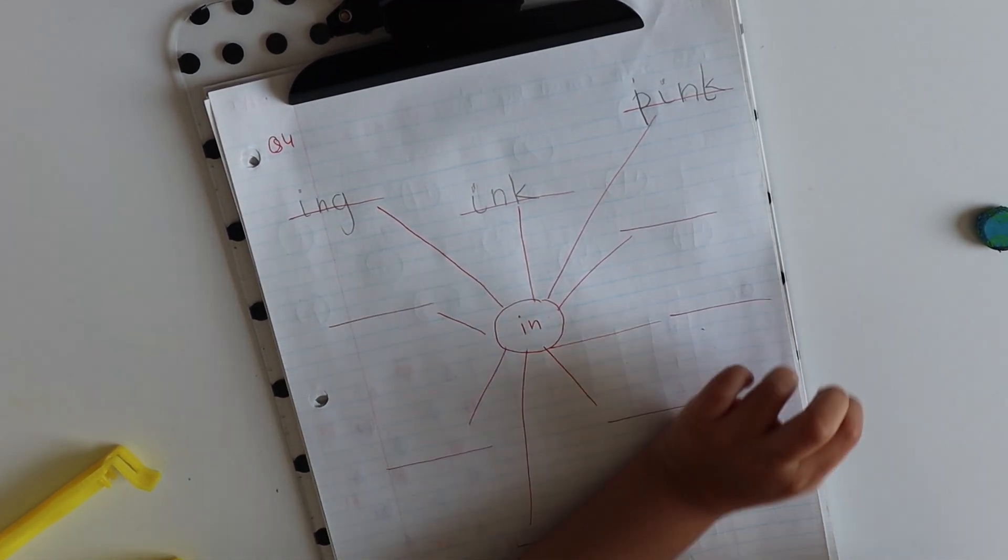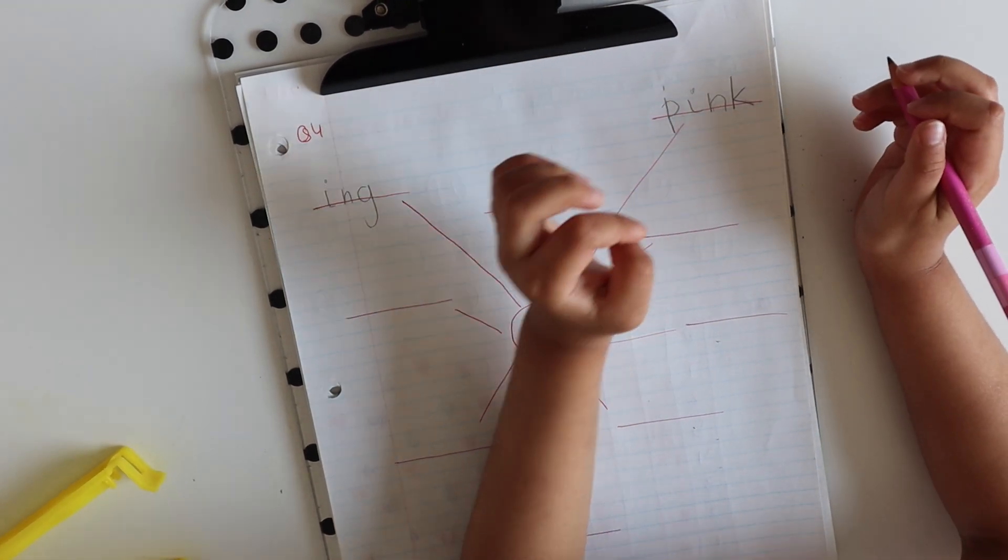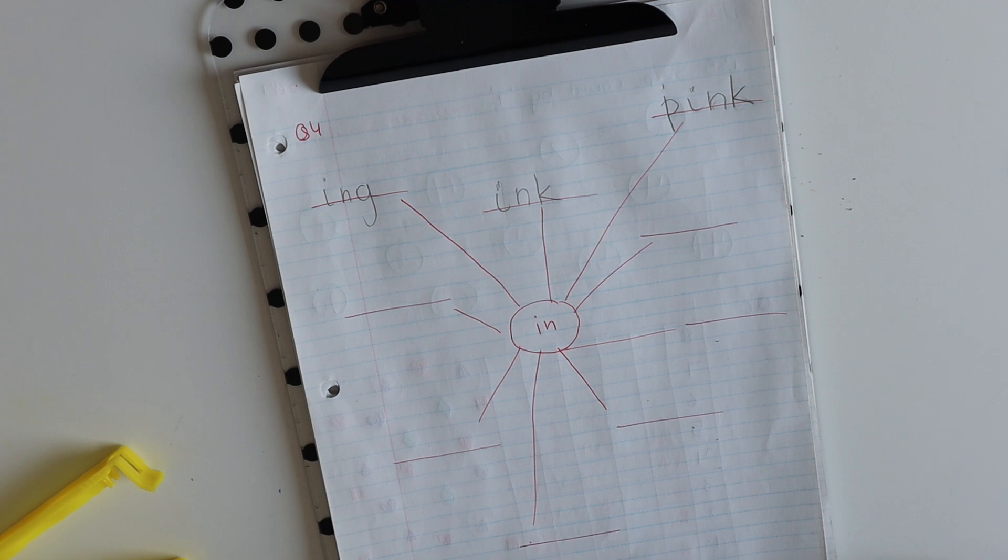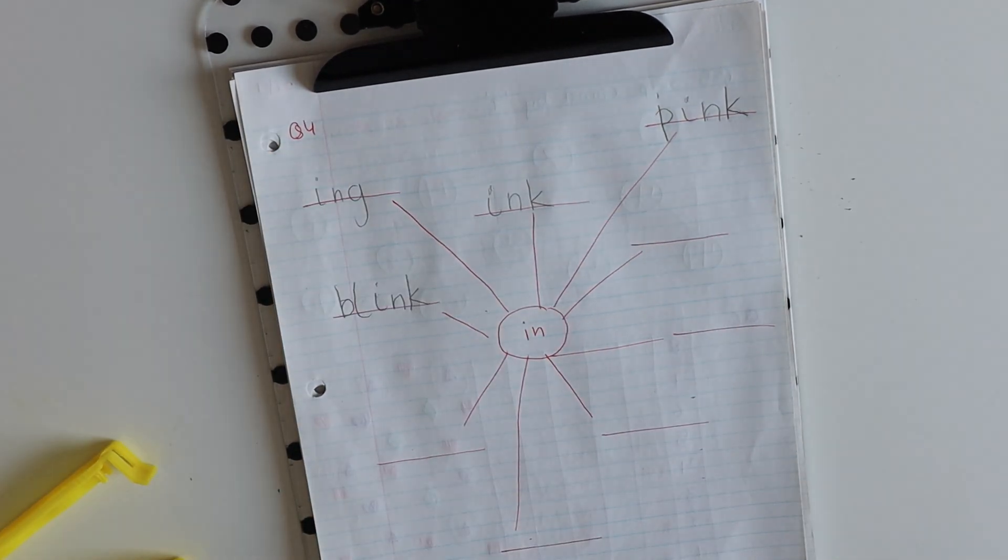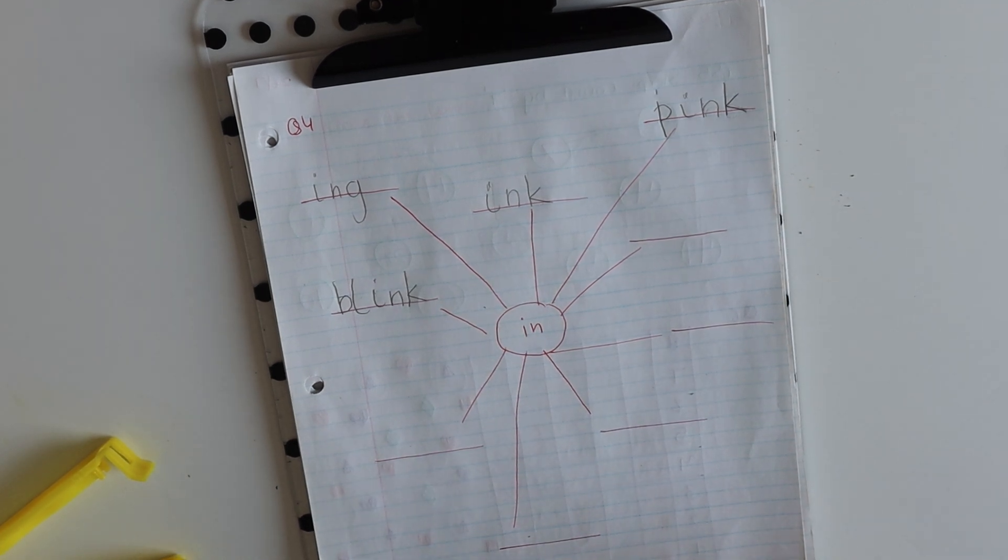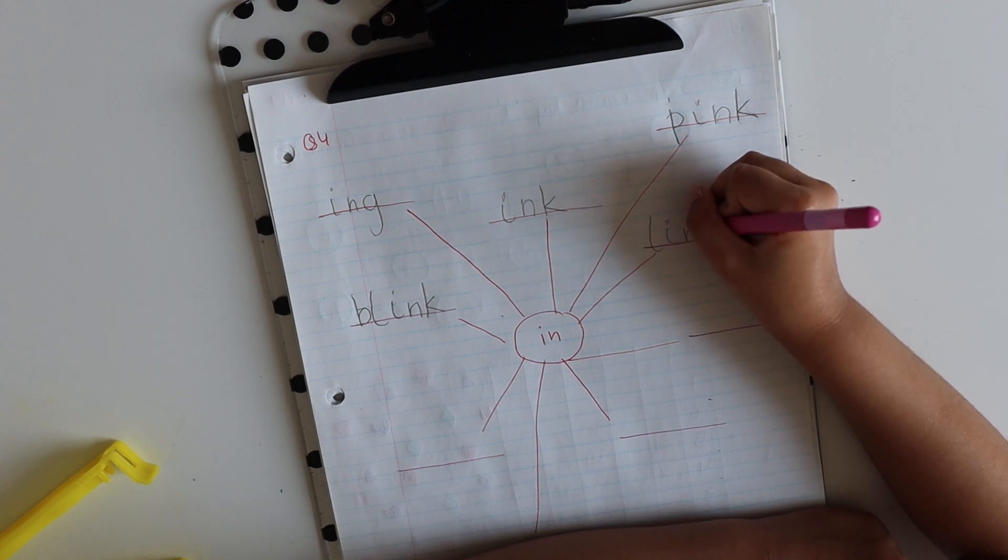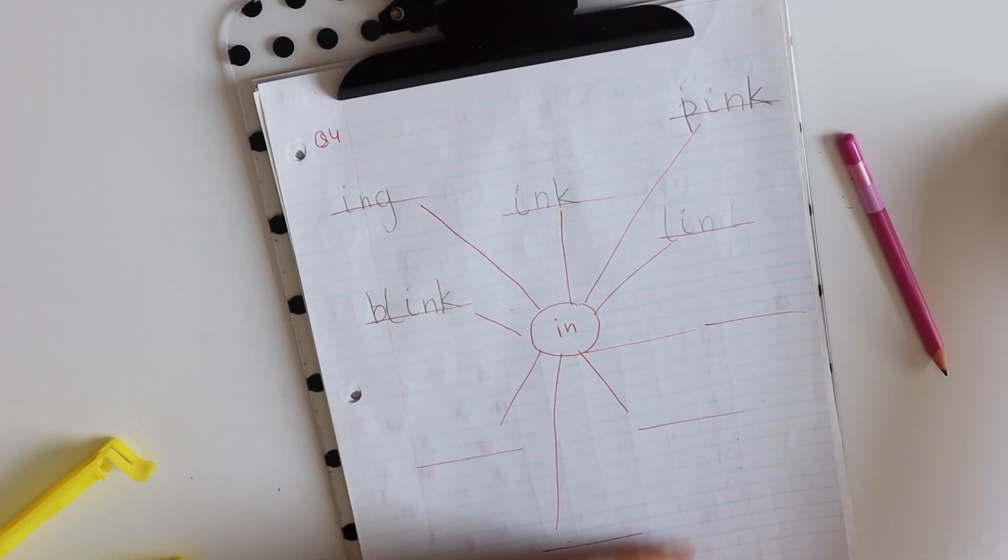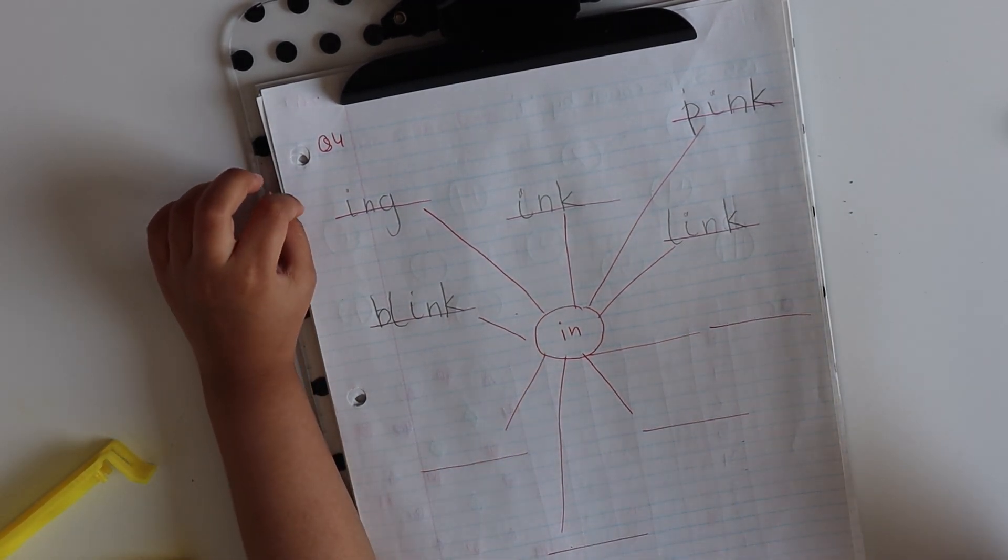You're not writing nicely. Pink. Can you give me the idea? It can be middle, beginning or ending. Okay. Blink. I need spelling of blink. It's B, L, I, N, K. Very nice. You can write blink. What else? Link. I need spelling of link. L, I, N, K. You're very cheeky, you're writing everything with ink. Ink.